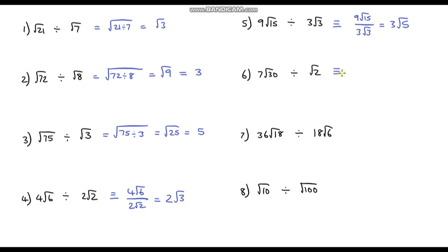Question 6: 7 root 30 over root 2. The denominator is 1 root 2, so 7 divided by 1 is just 7. Then root 30 divided by root 2 is root 15. So the answer is 7 root 15.